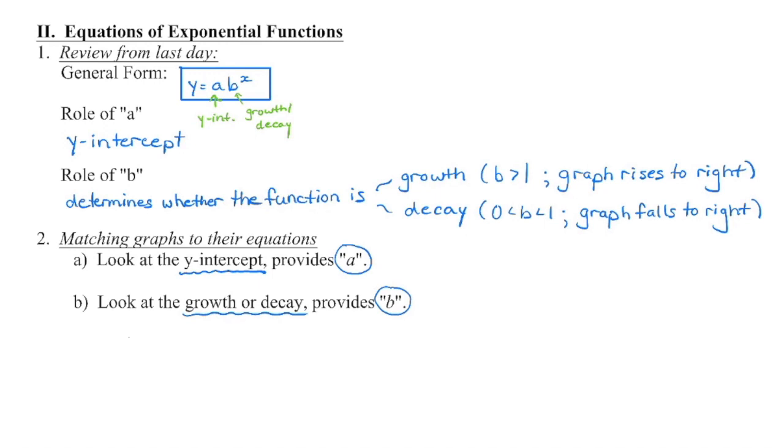We know the general form of an exponential function is represented by y equals ab to the power of x. That exponent contains the variable. We also know that a is the y-intercept of that function, and we know that b tells us whether it's a growth function or a decay function.